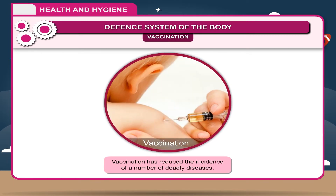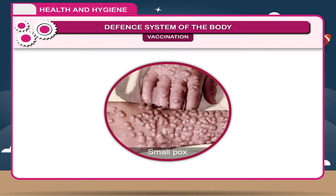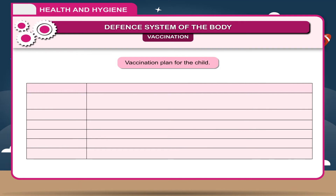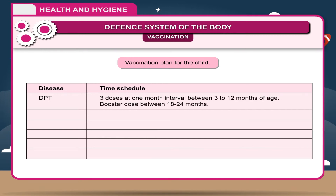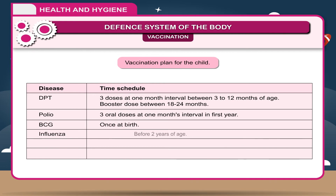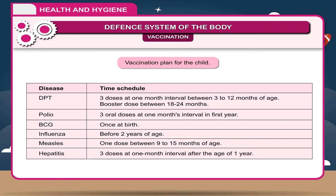Vaccination has reduced the incidence of a number of deadly diseases, for example smallpox. Vaccines for different diseases are given to children as per the plan in the table. The vaccination plan includes: DPT — 3 doses at 1-month intervals between 3 to 12 months, booster at 18–24 months; Polio — 3 oral doses; BCG — once at birth; Influenza — before 2 years; Measles — 1 dose between 9 to 15 months; Hepatitis — 3 doses after age 1 year.